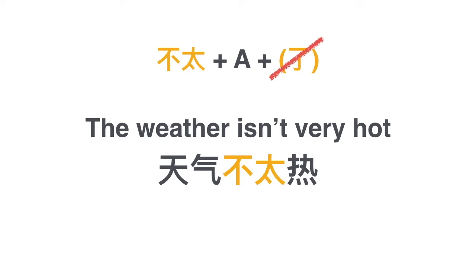If you want to negate that, you say 'not too cold' or 'not too hot' with 不太. Remember the tone change on 不 — it goes up if it's followed by a fourth tone character. 太 is a fourth tone character, so 不 changes to a second tone: 不太. But if you have 不太 + adjective, you cannot have 了. Make sure that you don't use 了 with 不太.